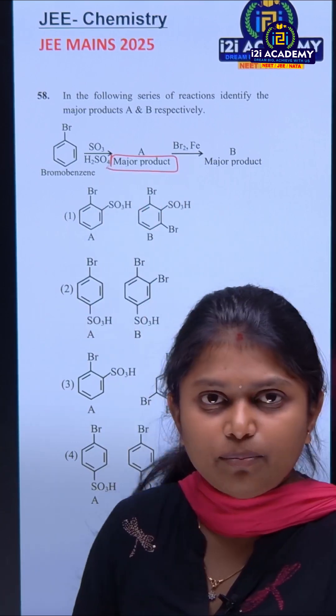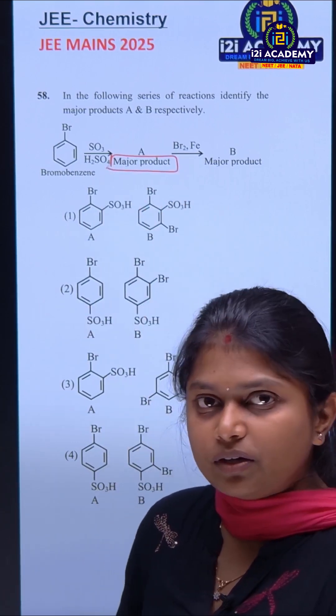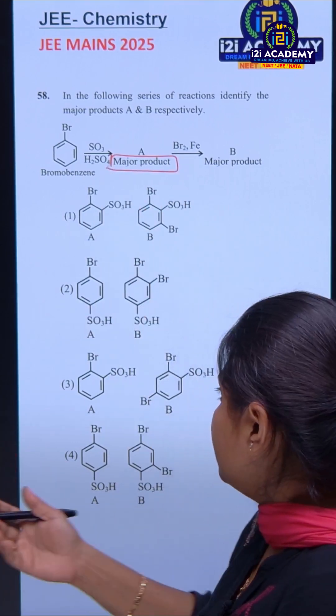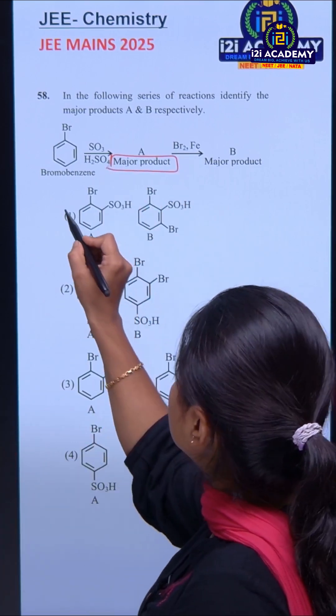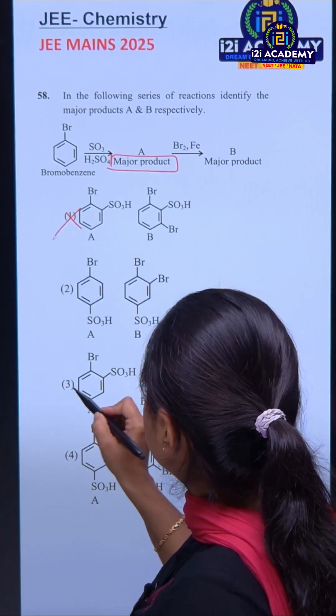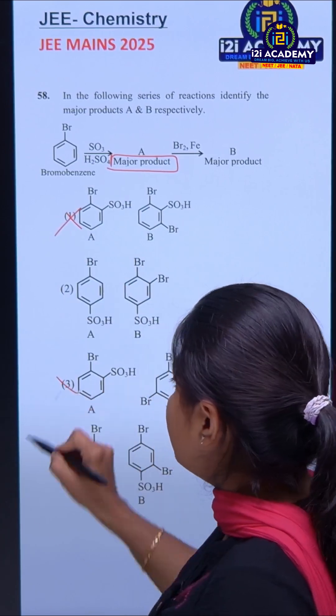We have to identify the major product. Para will be more dominant, so we will eliminate the ortho product.